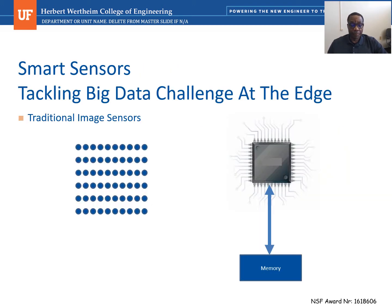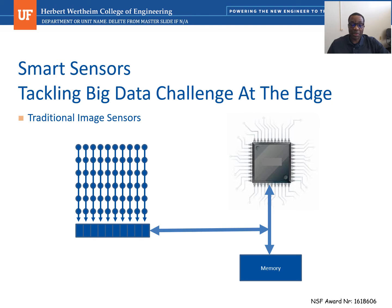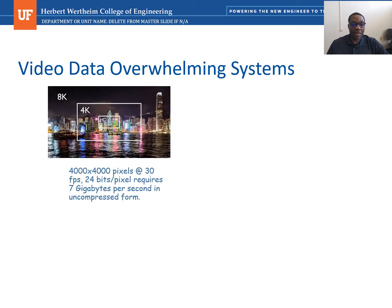The next application we consider in our lab is tackling the big data challenge directly at the edge. The example here is for image sensors, but applies to all types of sensors as well. In general, when we have sensors we collect data, and then send those data — usually in sequential form — to a back-end processor, which could be on the same board or in the cloud. Today, with the amount of data we're collecting from sensors, it becomes almost impossible to use the available bandwidth to first send those data to the cloud before doing processing. If you take the case of a 4K video, the amount of data processed per second is something like 7GB.